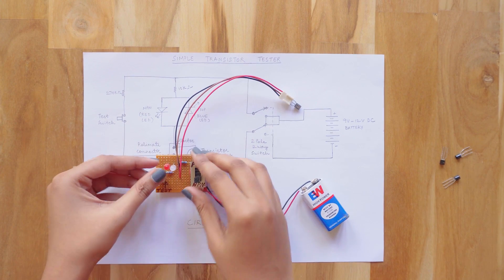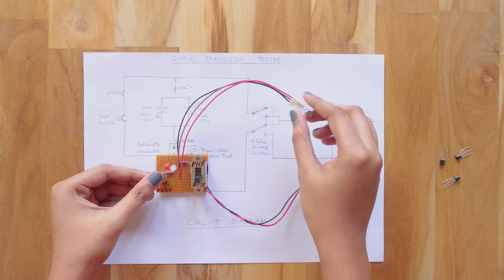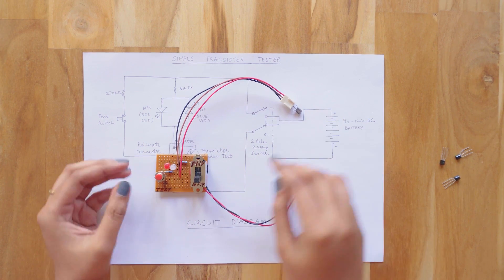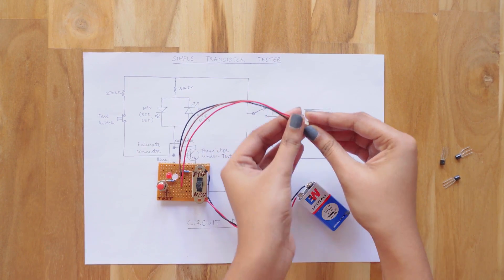As I am pressing the switch repeatedly, you can see that the red LED is glowing. This is because the transistor is an NPN one and it's working perfectly. Before taking the transistor out, make sure to switch off the circuit.